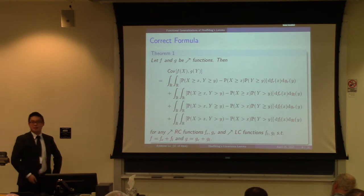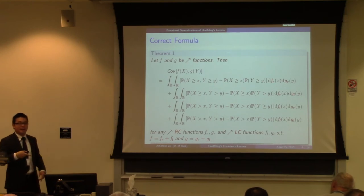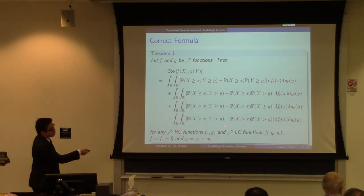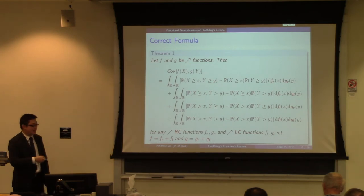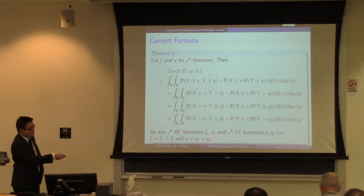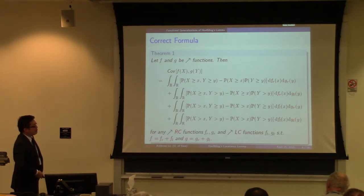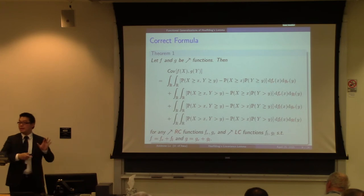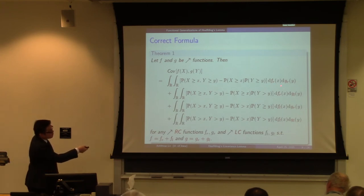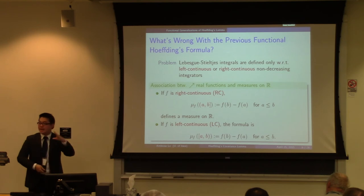Here is the correct generalized formula. We continue to assume f and g to be non-decreasing functions. In full generality, the formula comprises four terms — four double Lebesgue-Stieltjes integrals with different integrators. These integrators are obtained by decomposing f and g into their right-continuous components f_r and g_r, and left-continuous components f_l and g_l, yielding different integrators and integrands. Despite the formula's complex appearance, there is a pattern: sharp inequalities always go with right-continuous integrators, and strict inequalities always go with left-continuous integrators — reflecting which side of the interval is open or closed.